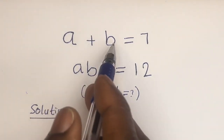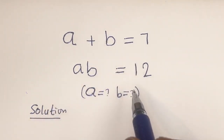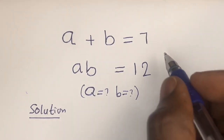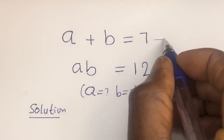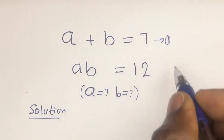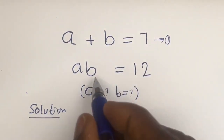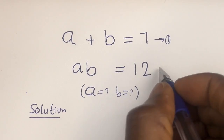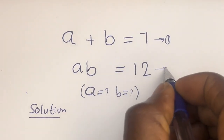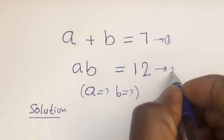a plus b is equal to 7 — let's call this equation 1. Then ab is equal to 12 — let's call this equation 2.